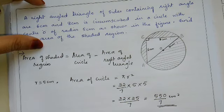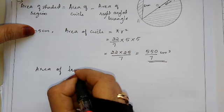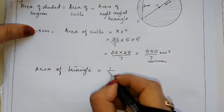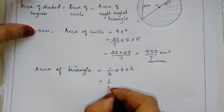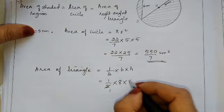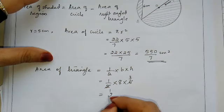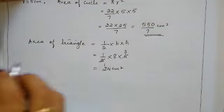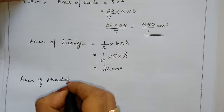Now we need to find the area of the triangle. Area of triangle equals half into base into height, which is half into 8 into 6, giving 24 cm square.